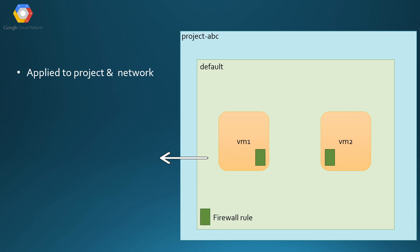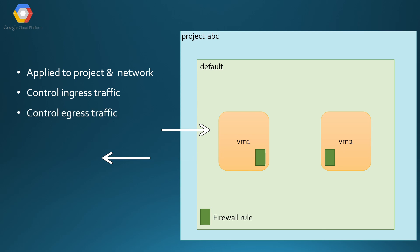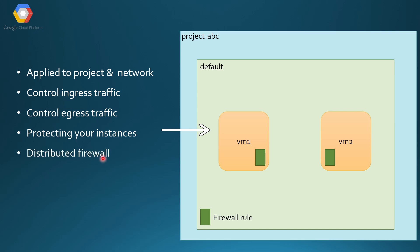Firewall rules help you control your ingress traffic and egress traffic — the traffic coming into your network and the traffic leaving your network. Without firewall rules, your instances are prone to malicious attacks from the internet or from anywhere. Firewall rules are most important as part of your VPC security to protect your instances.